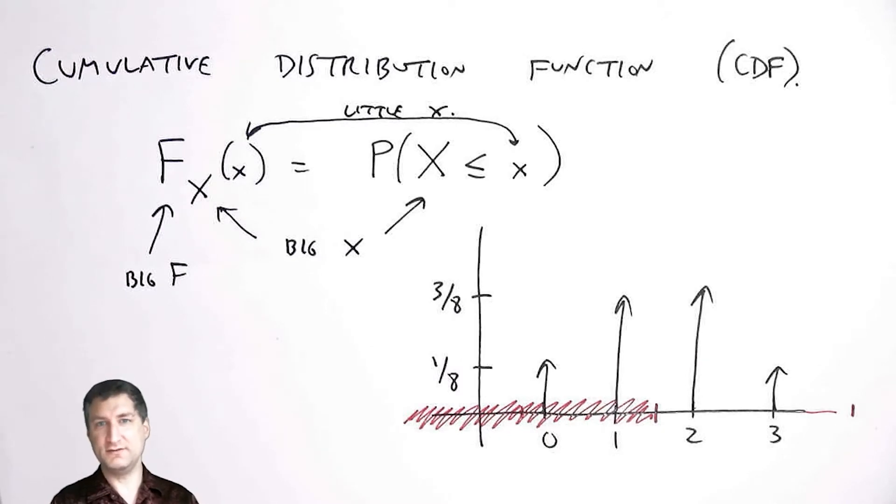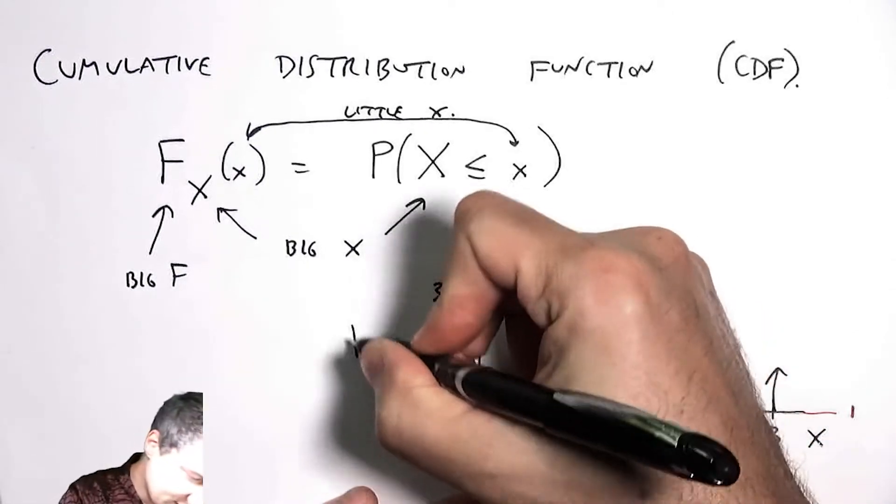And so I can ask about the CDF for any little x—it doesn't have to be an integer value, it could be any point along the x-axis. And so now since I'm starting to draw different things, I'm going to make a distinction.